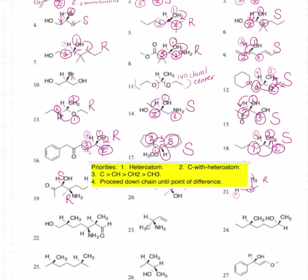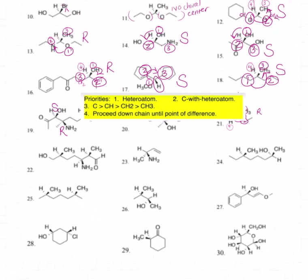For number twenty-two, we have a carbon with a heteroatom — I'm going to call that CIP priority number one. Hydrogen is number four. The rest of the molecule is CH2, which is CIP number two. The methyl group is CIP number three. It's always helpful when number four is pushed to the rear. We rotate counterclockwise, which makes this asymmetric center an S.